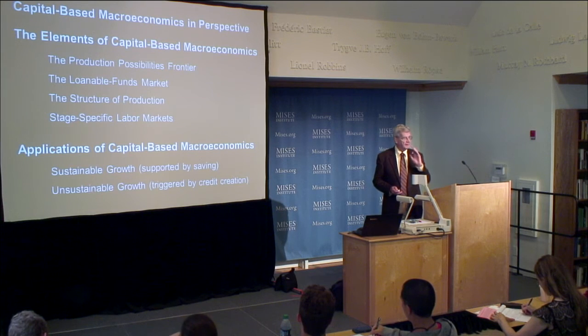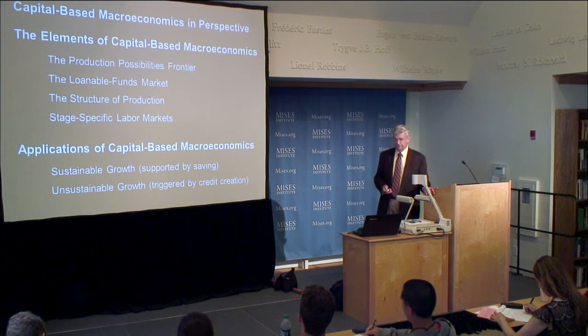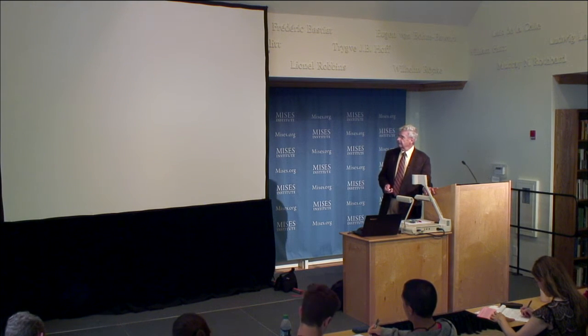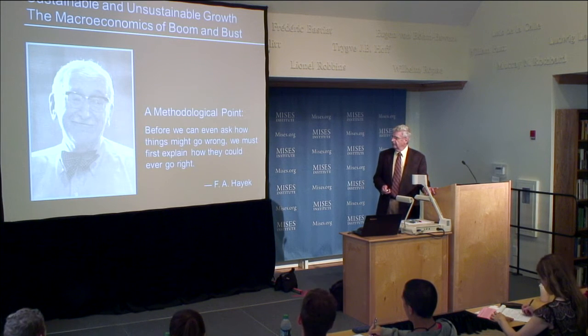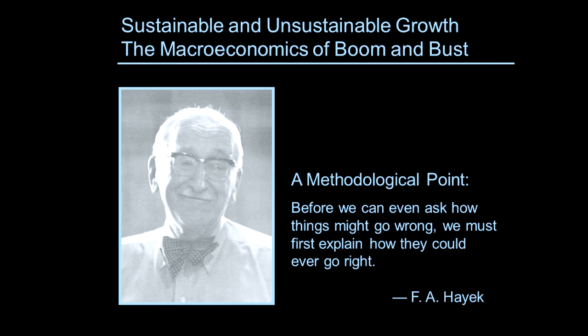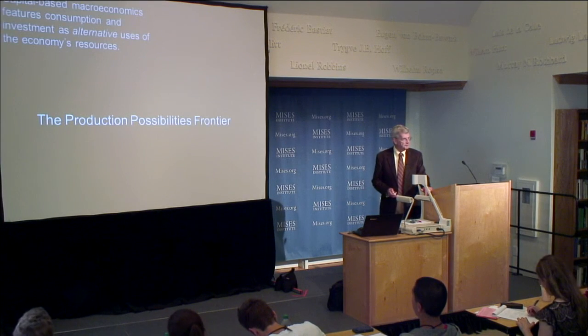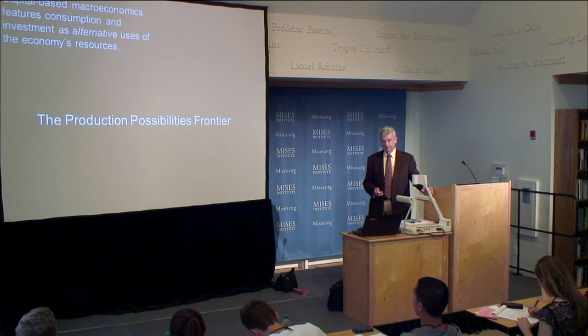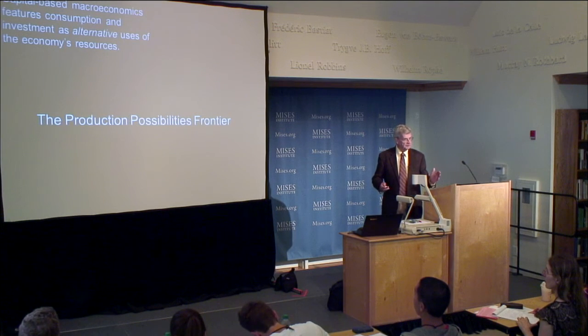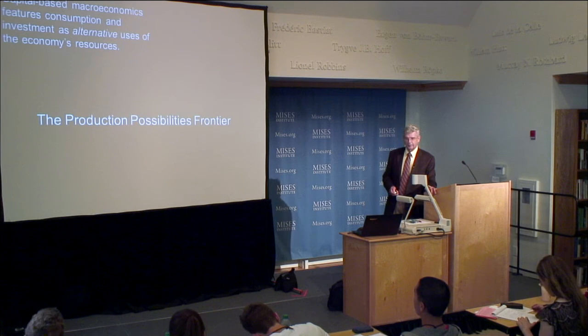I'll take up the bulk of the time with the first part — sustainable growth — and this comes from a methodological point I got from Hayek. Paraphrasing: before we can even ask how things might go wrong, we must first explain how they could ever go right. Explaining how things can go right is the bigger job. Once we get through that, it becomes obvious what happens when the Federal Reserve manipulates the interest rate. This is a methodological point that virtually all other schools ignore. Keynes, for instance, assumed the market was unstable and simply doesn't go right.